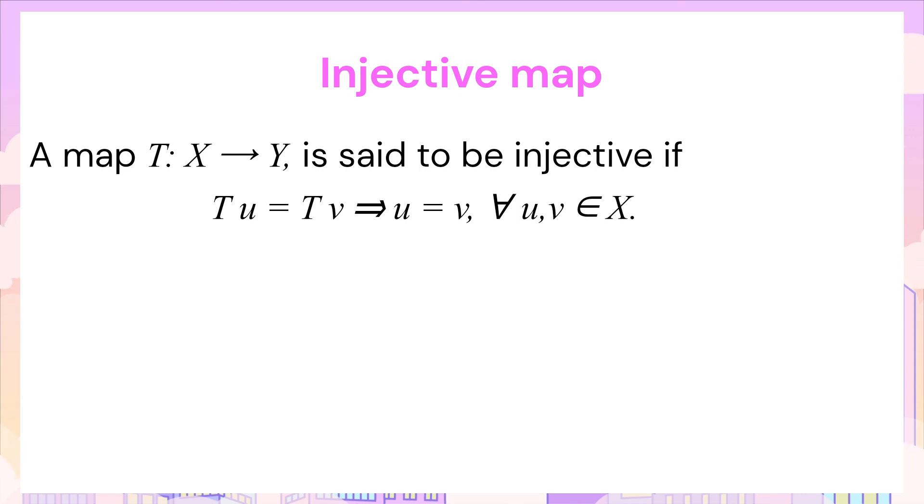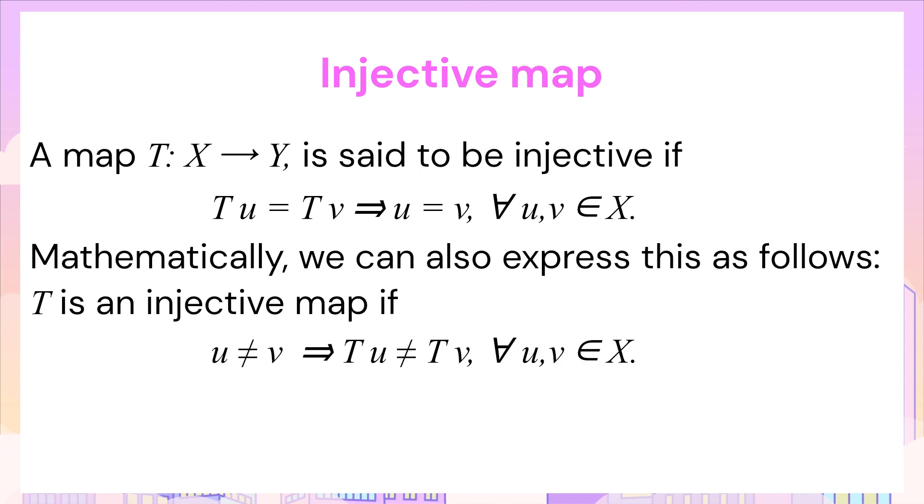Mathematically, we can say that a function T from X to Y is injective if for every u and v in X, whenever T(u) equals T(v), this implies that u is equal to v.